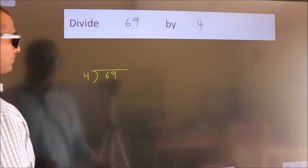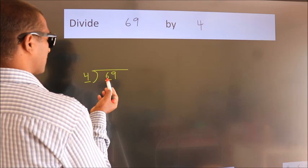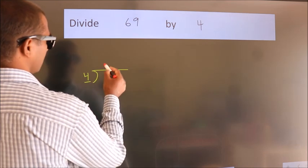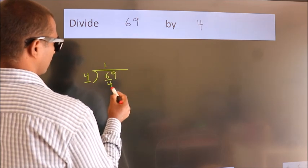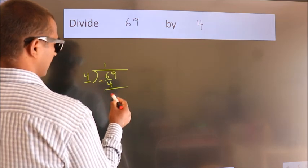Next, here we have 6, here 4. A number close to 6 in 4 table is 4 once 4. Now, we should subtract. We get 2.